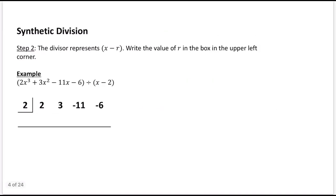Next, we look at the divisor. The divisor should be in x minus r form — that's one of the requirements for synthetic division. So if we think about this as x minus r, that means r is going to equal 2. We take that 2 and place it in the upper-left corner of the synthetic division table in a partial box.